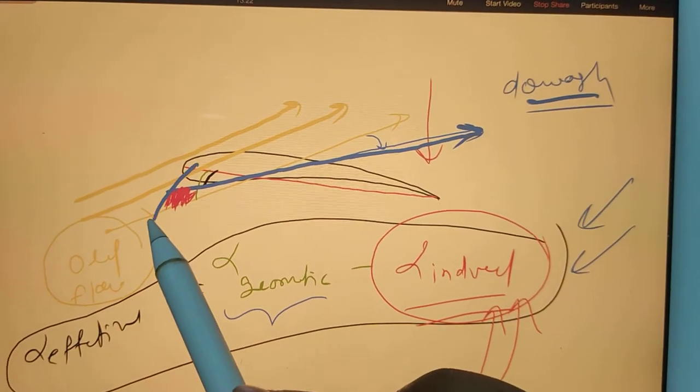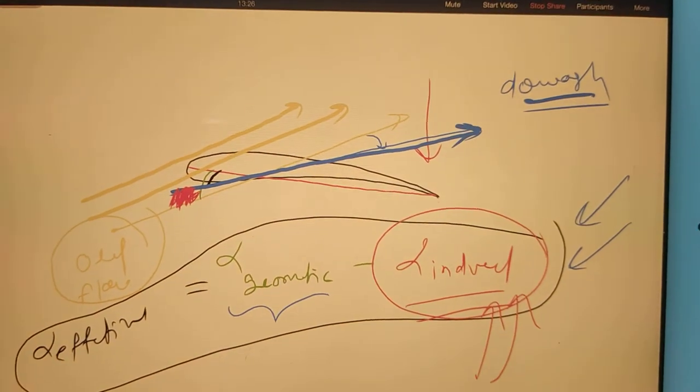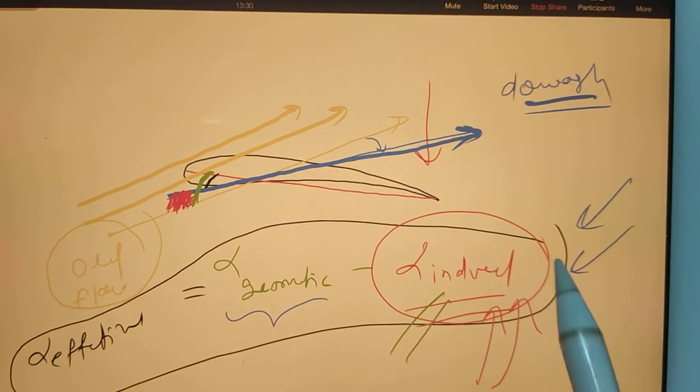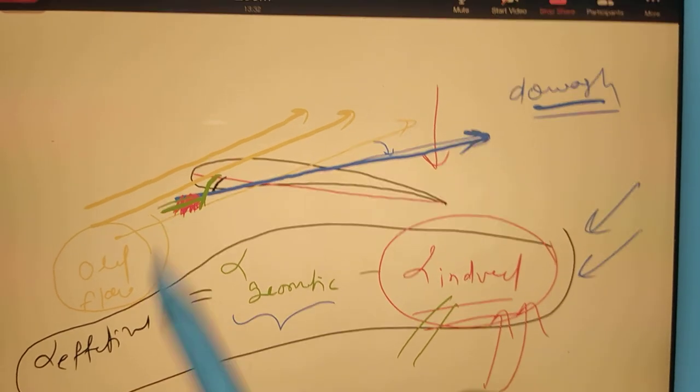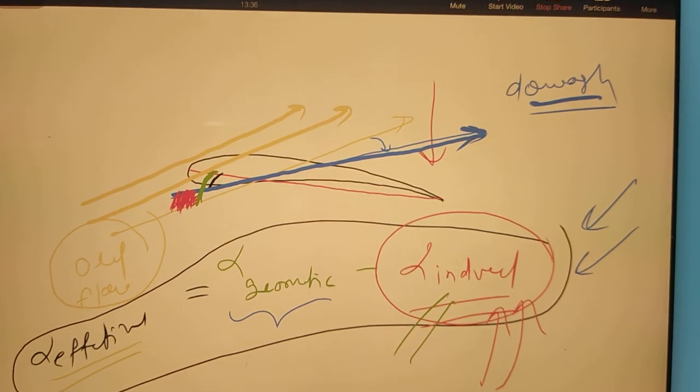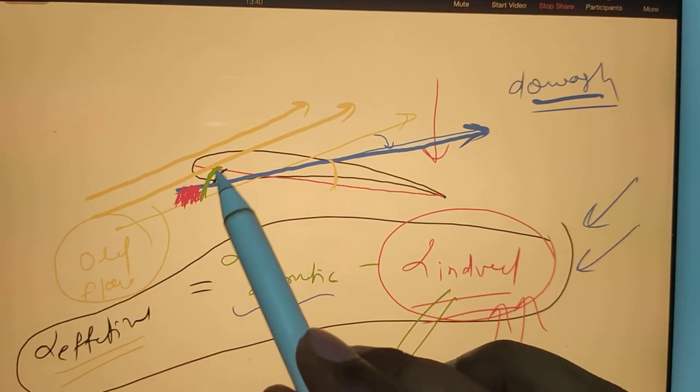earlier was this much between the red line and yellow line - the green I have shown here, right? The green part, that was our alpha geometric in the beginning. But because alpha induced is coming, this much angle now we are not able to use, so that angle decreased. So now your new angle we are calling alpha effective - what is remaining only between the red line and blue line, only this much.